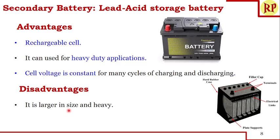The main disadvantage is that it is large in size and heavy — you cannot carry it in your pocket. However, the size differs depending on the application. At home, a two-wheeler or UPS will have a very small lead-acid battery, whereas a car, inverter, truck, or bus will have a larger one. The voltage is 12 volts for all sizes, but the size increases depending on the current required.